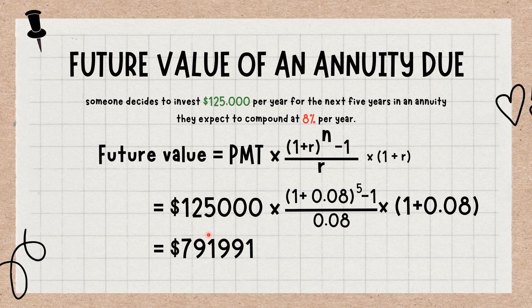All else being equal, the future value of an annuity due will be greater than the future value of an ordinary annuity because it has had an extra period to accumulate compounded interest. An annuity is a series of payments made over a period of time, often for the same amount each period. Investors can determine the future value of their annuity by considering the annuity amount, projected rate of return, and number of periods, as well as whether payments are made at the beginning or end of each period.